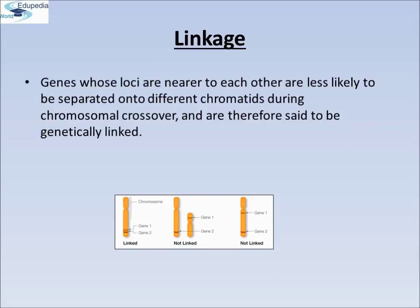Here you can see that gene 1 and gene 2 are linked in the first chromosome set. In the second set they are not linked because both are on different chromosomes. In the third figure, both genes are on the same chromosome but are so far apart that they are not linked. This means linkage applies to genes whose locations are nearer to each other, as they are less likely to be separated onto different chromatids during chromosomal crossover. In other words, the nearer two genes are on a chromosome, the lower the chance of a swap occurring between them, and they are more likely to be inherited together.